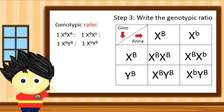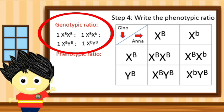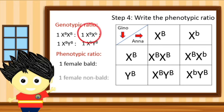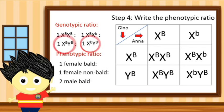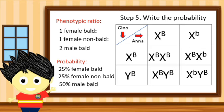After obtaining the genotypic ratio, Step 4: we need to write the phenotypic ratio. The phenotypic ratio is based on the genotypic ratio, but the writing is based on the phenotype or physical trait. Step 5: we need to write the probability. The probability is based on the result of our phenotypic ratio: 25% female bald, 25% female non-bald, and 50% male bald.